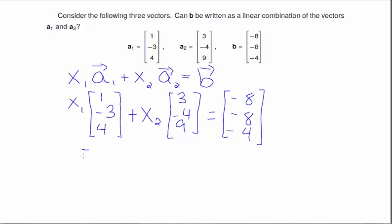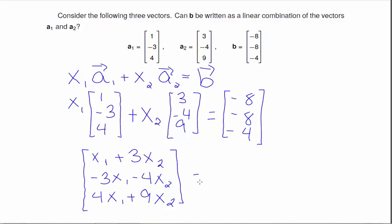So some vector addition and scalar multiplication makes this x1 plus 3x2, -3x1 minus 4x2, 4x1 plus 9x2, and this should be equal to [-8, -8, -4].